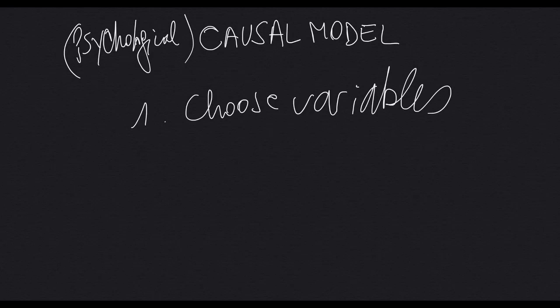The causal variable is the variable that if we make an intervention on that variable, it will produce an effect on the consequence variable. Now, what do you need to take into account to choose variables? You need to take into account your research design.